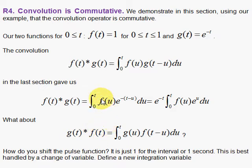So that means instead of f of u in the general formula for the convolution, I have g of u. And then instead of g shifted, I have the f function shifted.